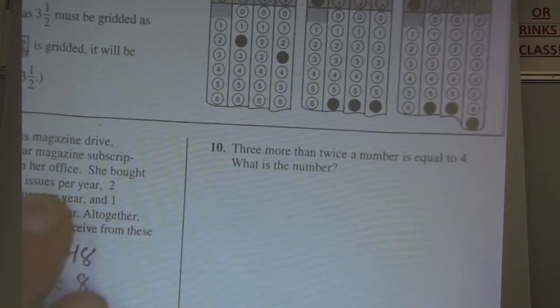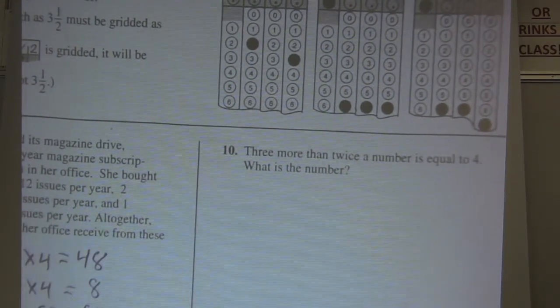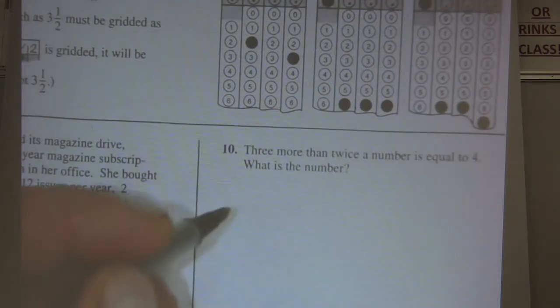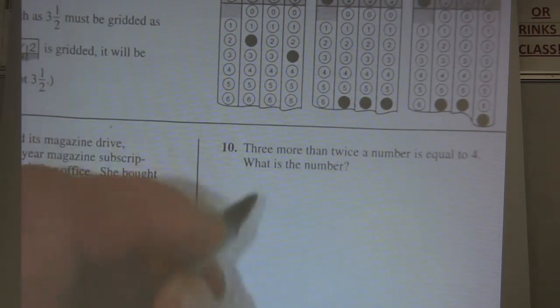All right, this next one here, number 10, and I'm going to skip the bubble in stuff. You guys can figure out how to bubble these in. Okay, three more than twice a number equals four. Here we go.